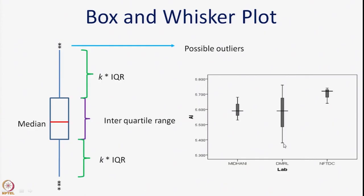The plot shows results from each laboratory. When the whisker has a short horizontal line on top and bottom, it represents the maximum and minimum values. For instance, the maximum value for one lab is around 5.5 to 5.7 percent aluminum, while DMRL shows a very wide range. This plot also shows the median and provides a useful way to compare data from three different sources — the same alloy analyzed three different ways.